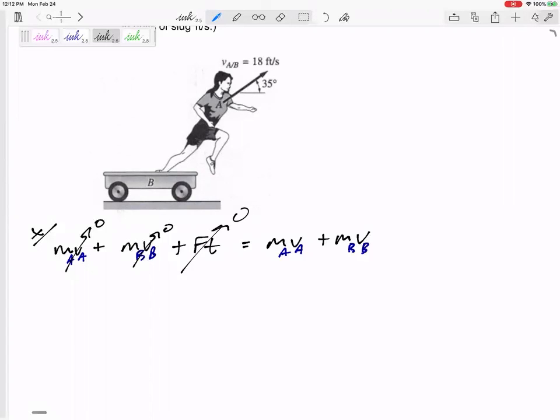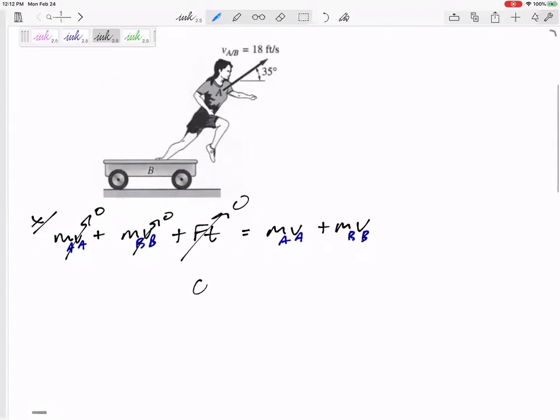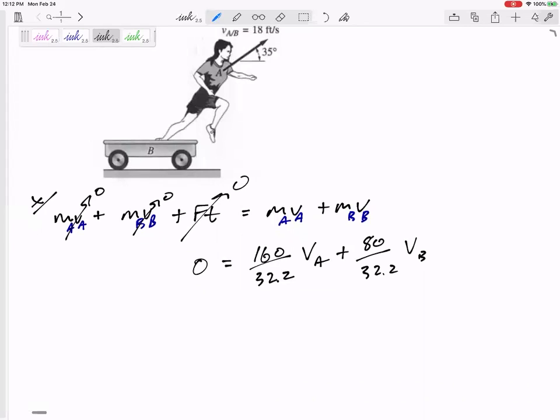Here's my equation: zero equals mass of the woman, 160 over 32.2 times va, and 80 over 32.2 times vb. I could have even multiplied that 32.2 to the right hand side. Let me do a little bit more math and say 2va plus vb equals zero.